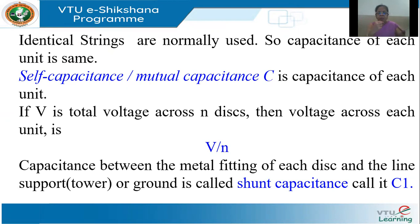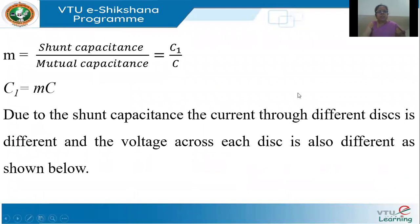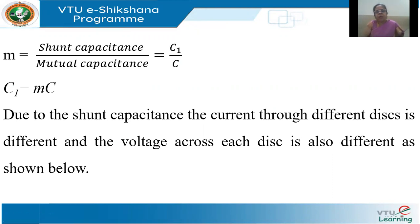Every disk has a metal fitting, so there will be a capacitance between this metal fitting and the support tower which is grounded. This is called the shunt capacitance. Let us assume the ratio of the shunt capacitance C1 to C is denoted by m. So my shunt capacitance is m times the self or mutual capacitance. The problem with the shunt capacitance is that it will create different voltages across each disk, even though all the disks are identical.